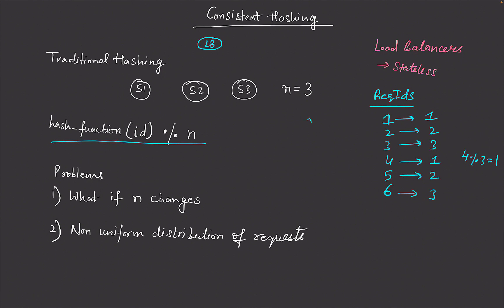So all request IDs whose hash function output equals one are going to server one. The problem with this approach is: what if n changes — the number of servers changes? What if we add a server or delete a server? Let's consider the case where we add a server.